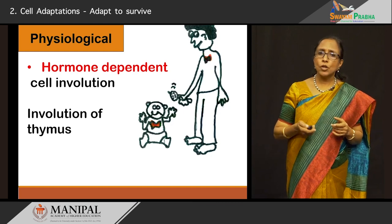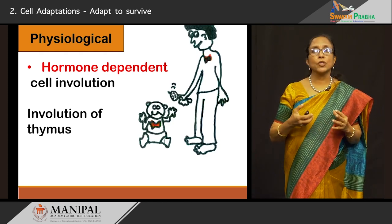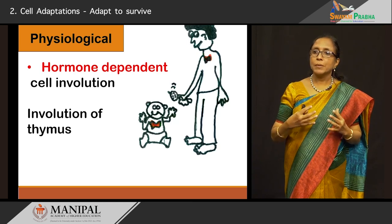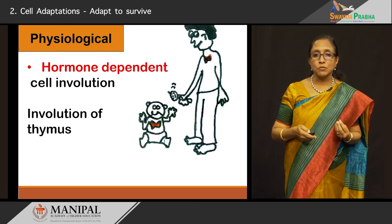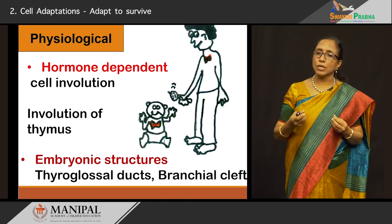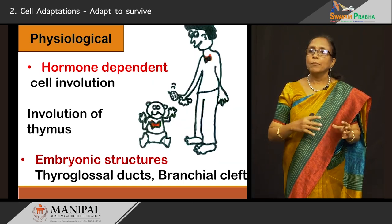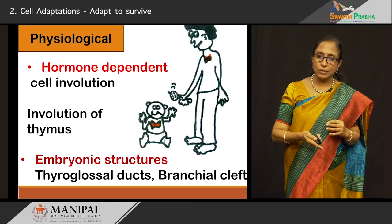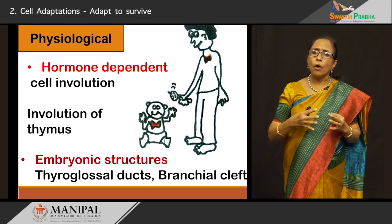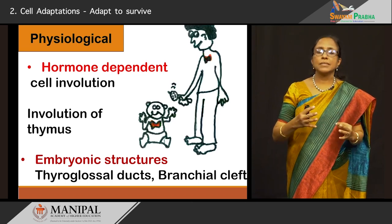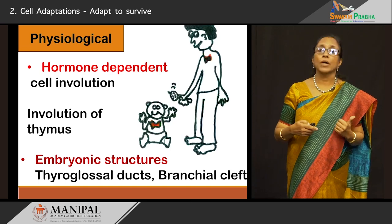Looking at physiological conditions of atrophy, we see them in various hormone-dependent conditions. For example, the thymus is huge in the baby because it is required for various immune functions. But when the child grows, the thymus involutes and becomes small. Similarly, there are several embryonic structures which are there during fetal life but disappear as the baby is born — like the thyroglossal ducts, branchial clefts, the reproductive system formed from the Müllerian and Wolffian systems — all of them change so that they are not there during adult life. All these are atrophied by the process of apoptosis.